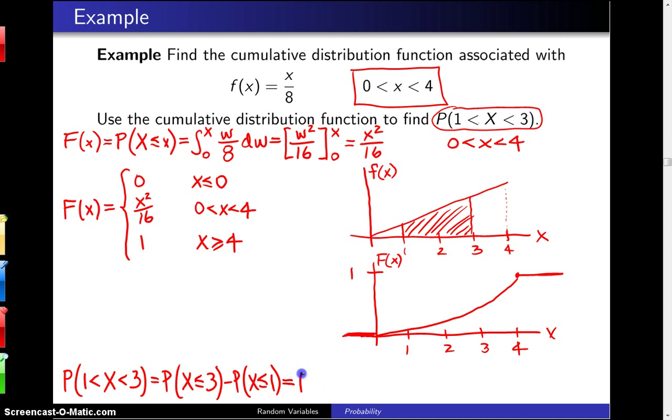That is to say, this is capital F of 3 minus capital F of 1, and those can be computed using capital F of x. That is going to be 9 divided by 16 minus 1 divided by 16, that's 8 sixteenths or 1 half.